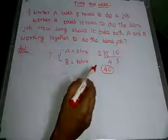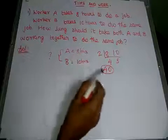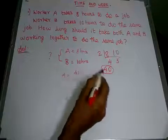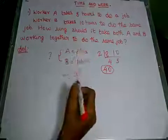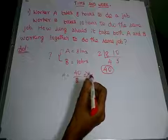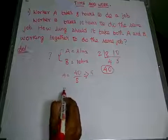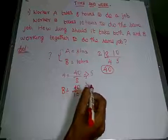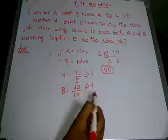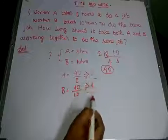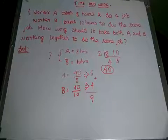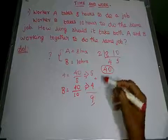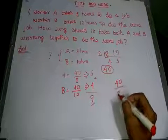You need to divide the LCM by each worker's time. For A: 40 divided by 8 equals 5. For B: 40 divided by 10 equals 4. The total is 5 plus 4 equals 9. Then you need to divide the LCM by the total: 40 divided by 9.